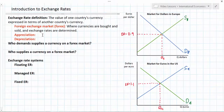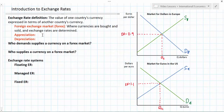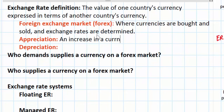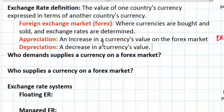Two things can happen to the value of a currency in the forex market depending on how demand or supply change. If the demand for a currency rises or the supply decreases, all else held constant, we'll see an appreciation — an increase in a currency's value on the forex market. On the other hand, if demand falls or supply increases, a currency's value will decrease, known as a depreciation. Appreciation and depreciation always refer to a change in value against another currency.